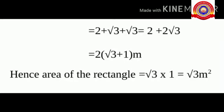Taking 2 as common outside, the perimeter is 2 into (root 3 plus 1) meter. The area of the rectangle is equal to root 3 into 1, which is equal to root 3 meter square.